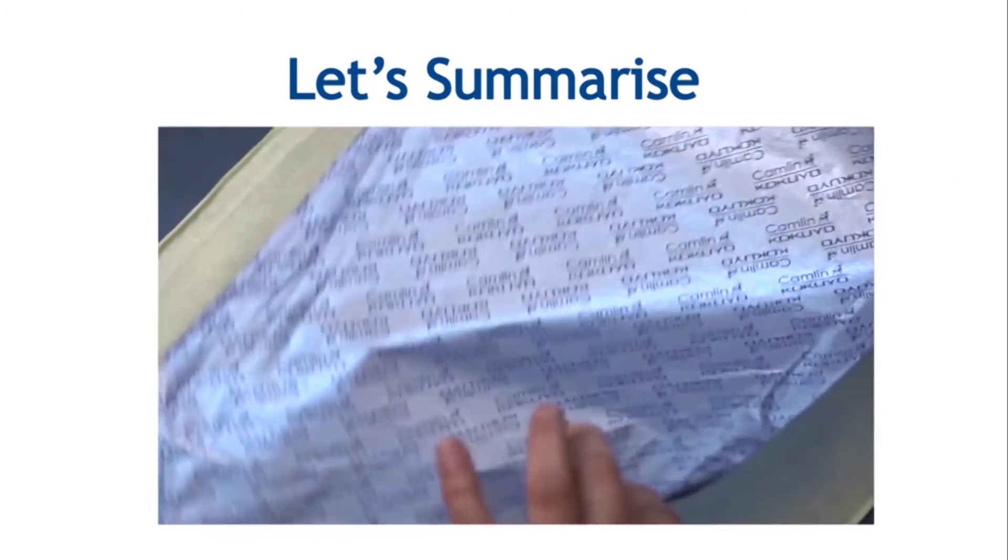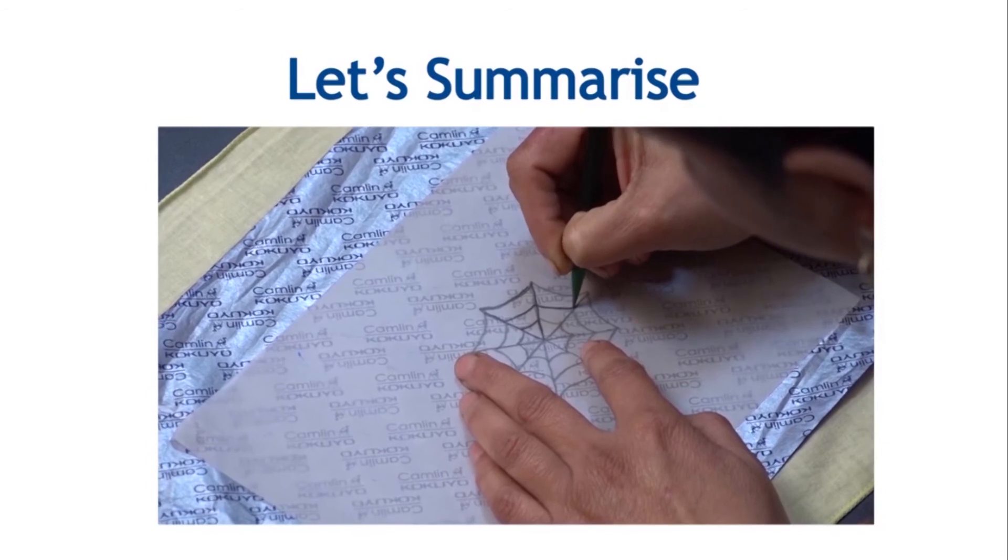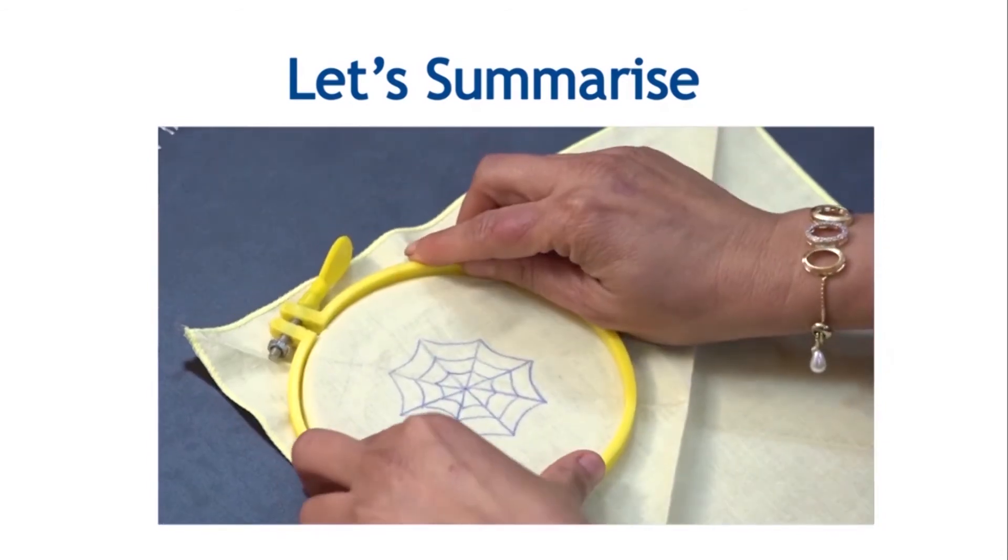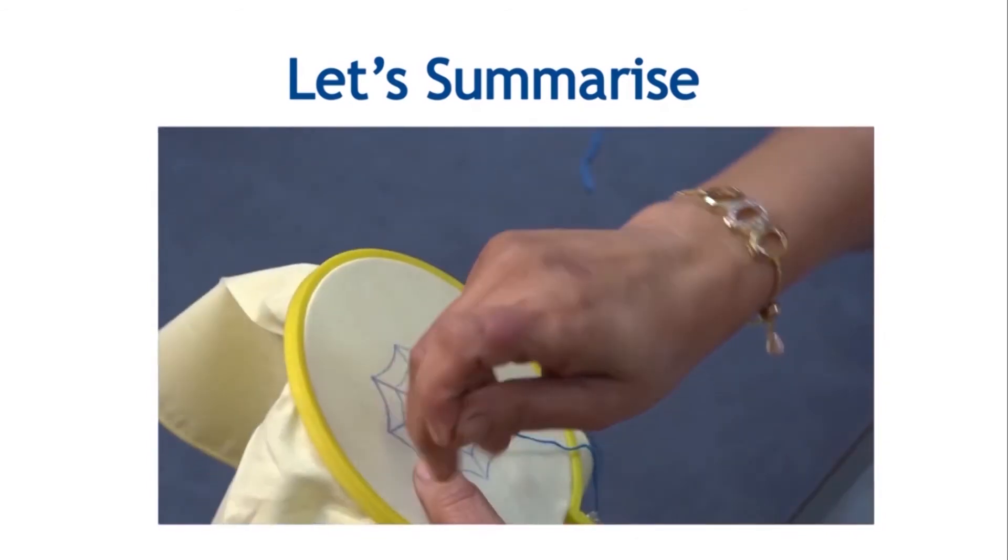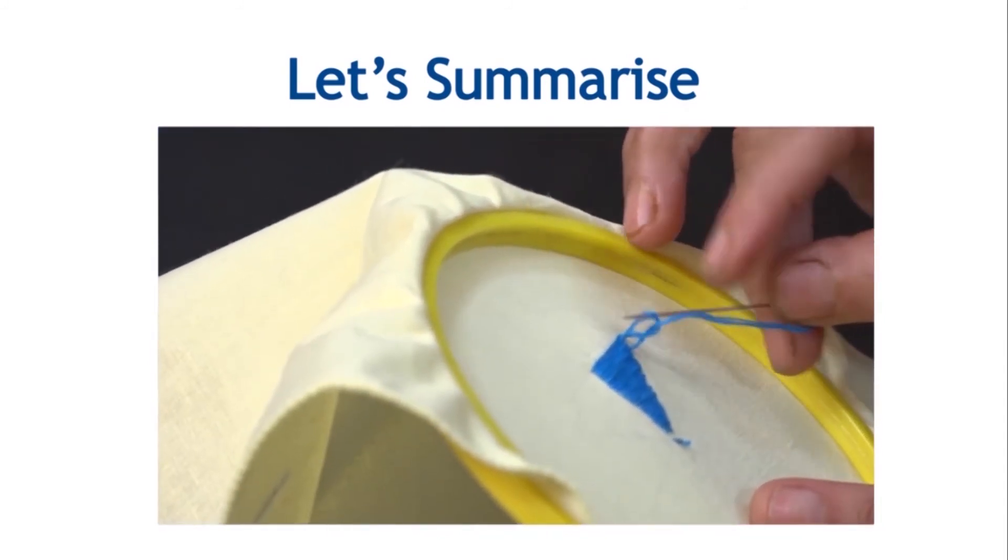Now let me summarize the embroidery steps quickly. Place the fabric on a neat and clean surface and trace the outline of the design. Fix the fabric on the embroidery frame. Now start the embroidery work. After completion of the stitch, finish and remove from the embroidery frame.